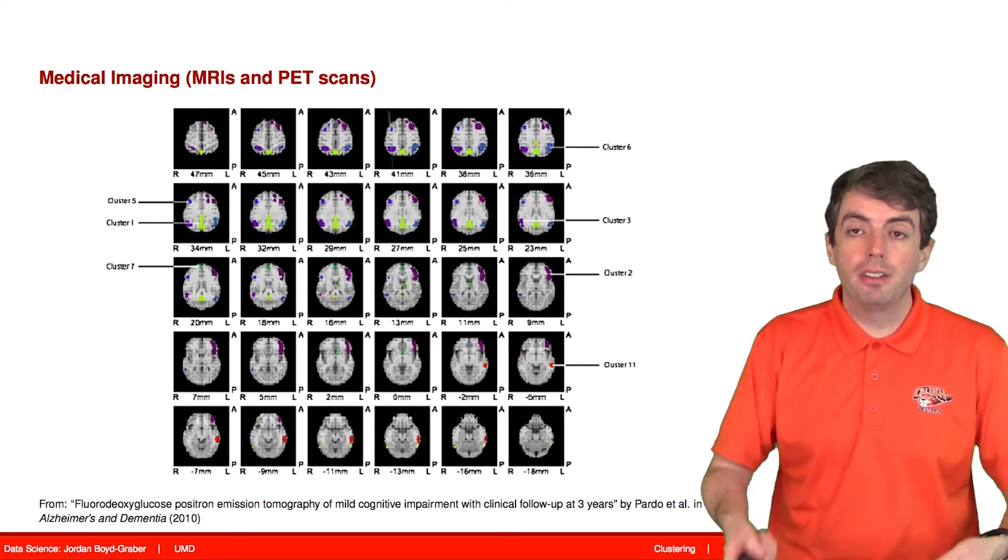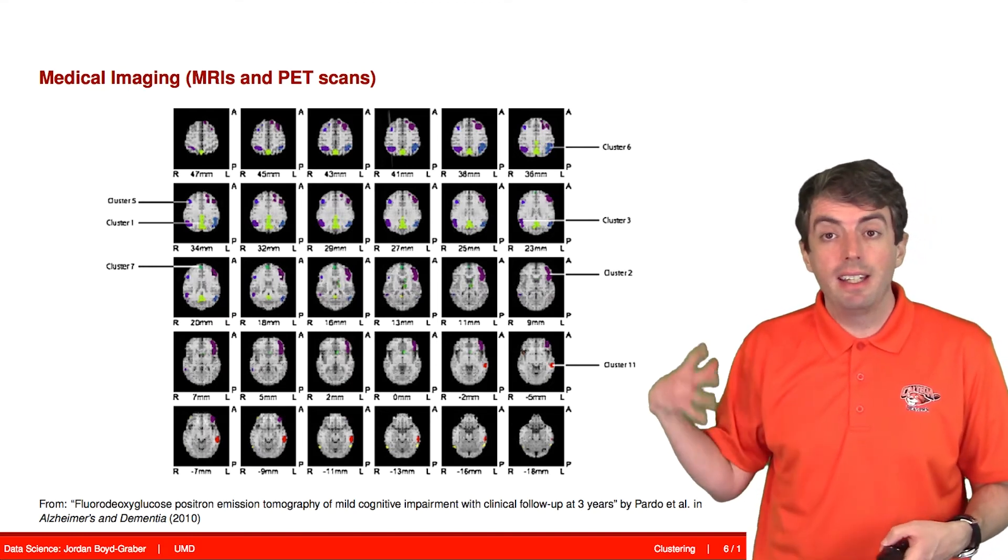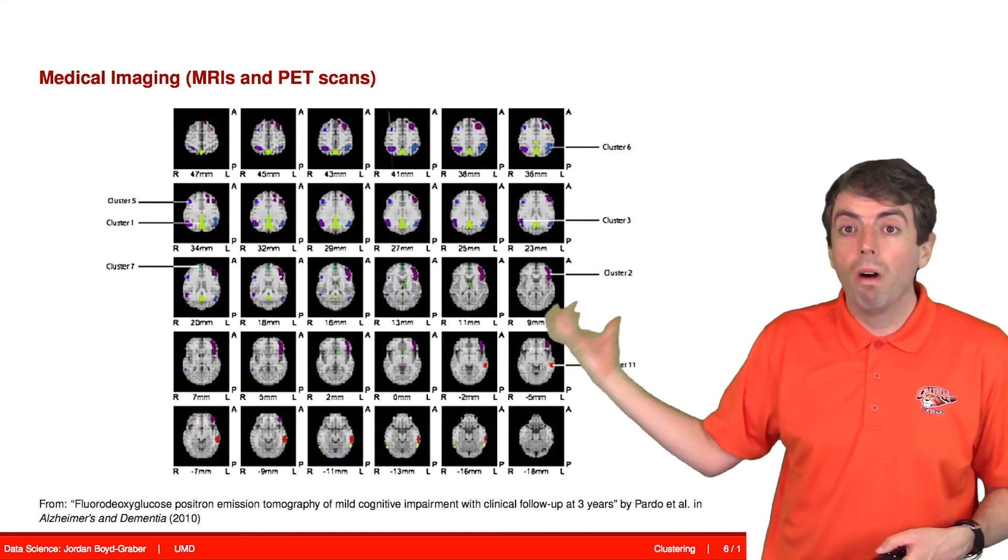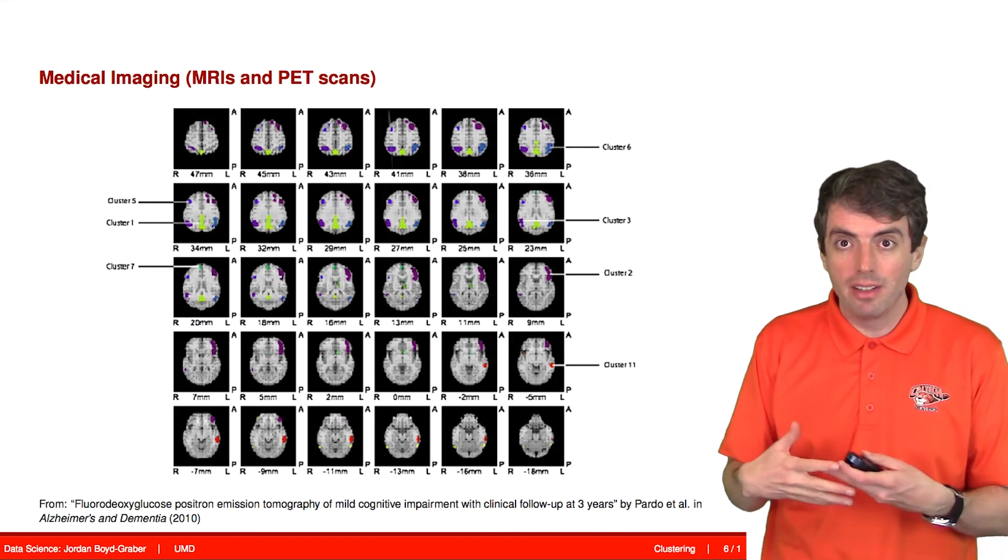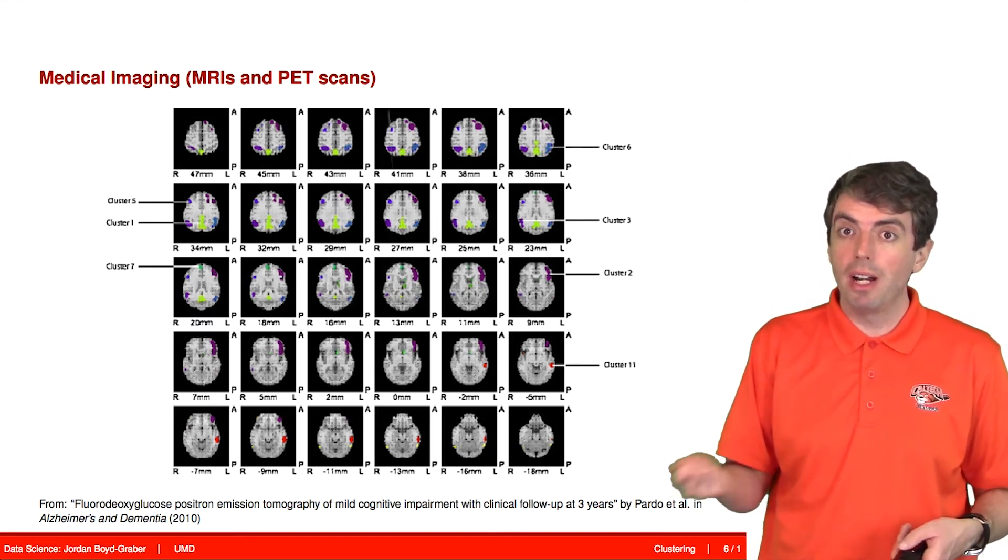Even within the field of biology, you can take a step back and instead of looking at individual genes, you can look at the entire brain. You can try to cluster what activation signals are similar to each other, put those into the same cluster, and perhaps do a better job of understanding what parts of the brain are linked together.